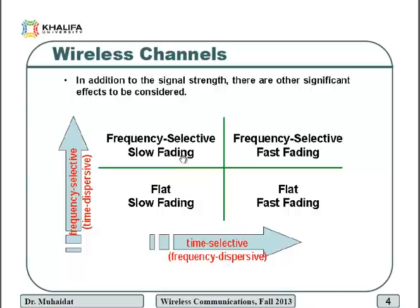The coherence bandwidth is related to the delay spread by two estimations. If the frequency correlation function is greater than 90%, the coherence bandwidth equals 1 over 50 times the delay spread. If the frequency correlation function is greater than 0.5 (50% correlation), the coherence bandwidth is 1 over 5 times the delay spread.